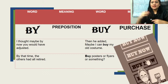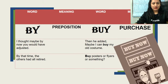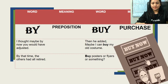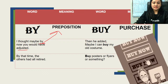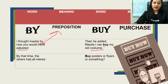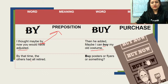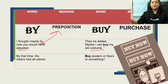Next is 'by' and 'buy'. BY is a preposition — 'I thought maybe by now you would have adjusted' and 'by that time, the others had already retired.' BUY means to purchase — 'maybe I can buy an old costume' and 'buy posters or flyers — whatever you are comfortable with, purchase them.'